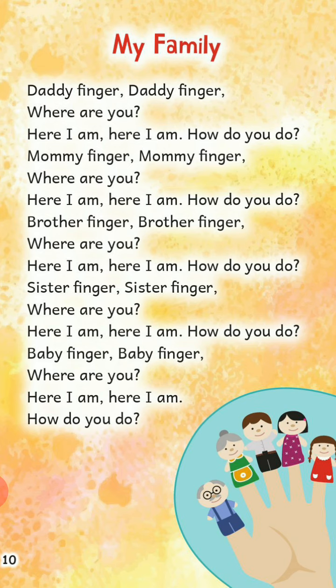My Family. Daddy finger, daddy finger, where are you? Here I am, here I am, how do you do? Mommy finger, mommy finger, where are you? Here I am, here I am, how do you do? Brother finger, brother finger, where are you? Here I am, here I am, how do you do? Sister finger, sister finger, where are you? Here I am, here I am, how do you do? Baby finger, baby finger, where are you? Here I am, here I am, how do you do?